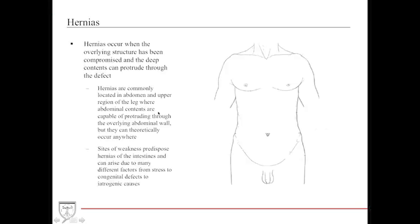Hernias occur when the overlying structure has been compromised, allowing deep contents to protrude through the defect. They are commonly located in the abdomen and upper region of the leg, where abdominal contents can protrude through the overlying abdominal wall, but can theoretically occur anywhere there is wall weakness. Sites of weakness predispose hernias and can arise from stress, congenital defects, or iatrogenic effects caused by surgical access sites.